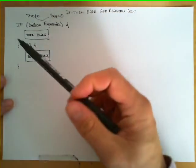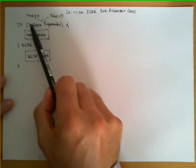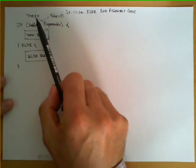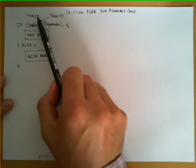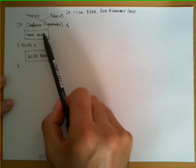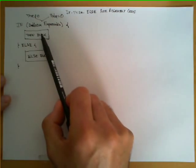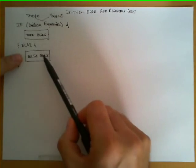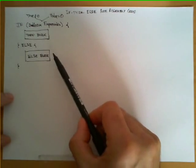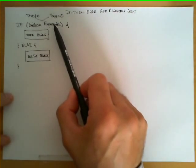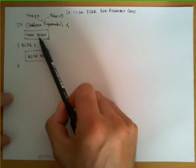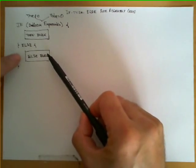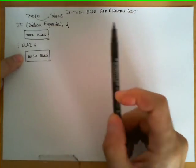The semantics — what it means — is that after evaluating the boolean expression, if the result is true, or in our case a value different from zero, the then-block will be executed and the else-block will be ignored. And vice versa: if the boolean expression returns false when evaluated, the then-block is ignored and only the else-block will be executed.